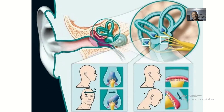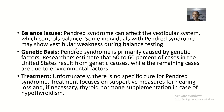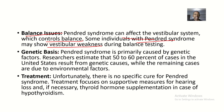This image illustrates the anatomy of the inner ear. Anything affecting the ear affects the vestibulocochlear nerve, which has two components: a vestibular component for balance and a cochlear component for hearing. You can't affect only one component — anything happening to the vestibulocochlear nerve affects both. Pendred Syndrome can affect the vestibular system, which controls balance, and some individuals may show vestibular weaknesses during balance tests.